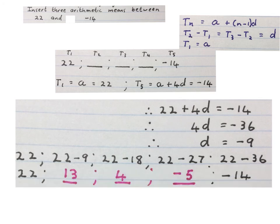The three arithmetic means between 22 and minus 14 are 13, 4, and minus 5. And I only wrote this one to prove to myself that the sequence is working. Please stop the video and get your brain around this question.